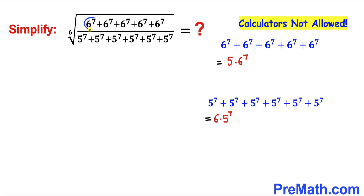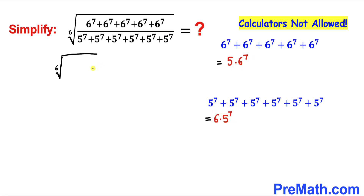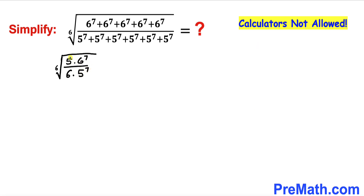So I'm going to replace this numerator by 5 times 6^7 and this denominator by 6 times 5^7. We can write the 6th root of the numerator divided by denominator as the 6th root of (5 times 6^7) divided by (6 times 5^7). Now let me put the 5 and 5^7 together, and likewise 6^7 and 6 together, giving us (5 divided by 5^7) times (6^7 divided by 6).